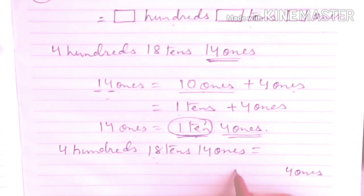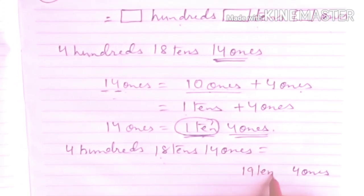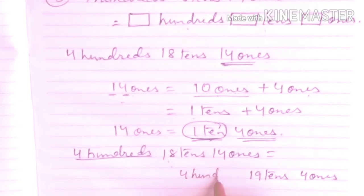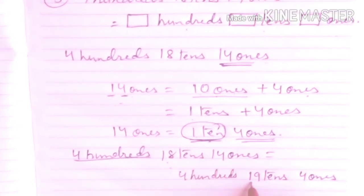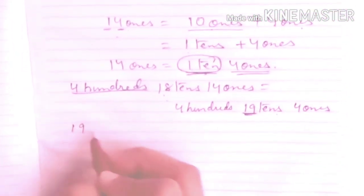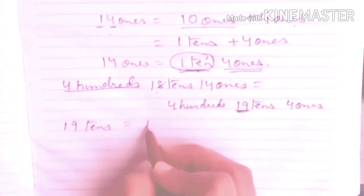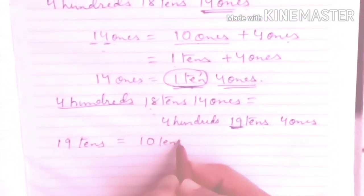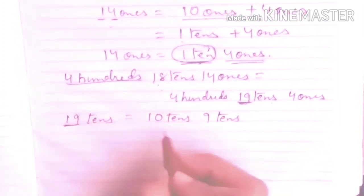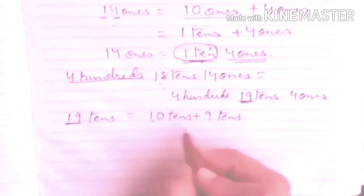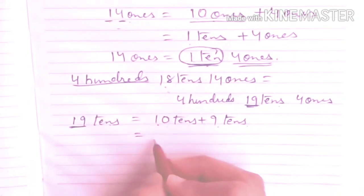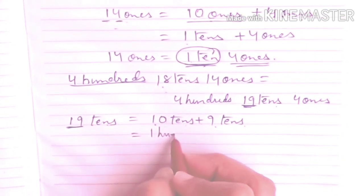Here we have 19 tens. How can we regroup 19 tens? 10 tens plus 9 tens. So 19 tens equals 10 tens plus 9 tens. 10 tens equals what? 100. And here we have 9 tens.